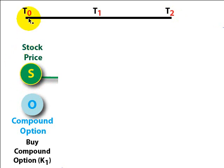If today, time 0, we purchase a call option, we are buying the right to exercise at a price of K1, and in exchange for that we will receive a call option. So in this case, we are purchasing a call option on a call option.